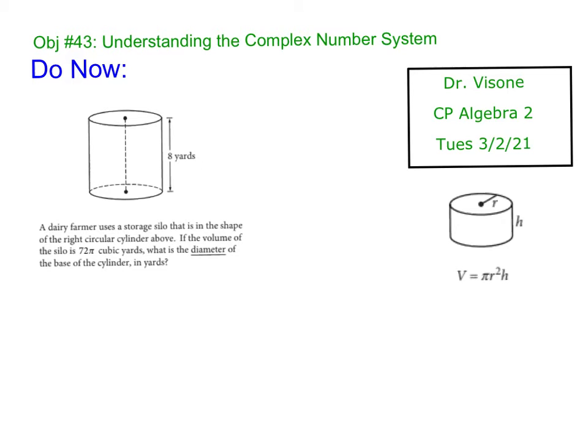A dairy farmer uses a storage silo that is in the shape of a right circular cylinder. The volume of the silo is 72π cubic yards. What is the diameter of the base of the cylinder in yards? So I gave you the formula. They give you this formula on the SAT test on the front. If the volume is 72π, that equals πr²h. We know the height is 8, so 72π equals πr² times 8.